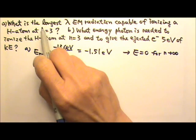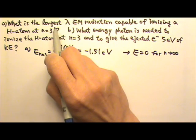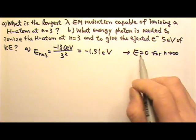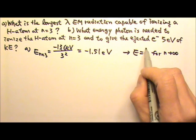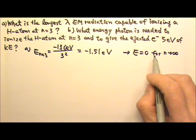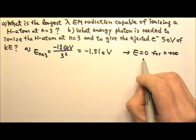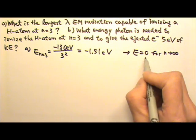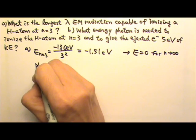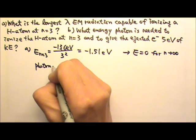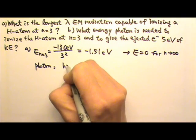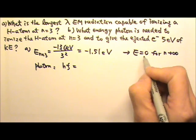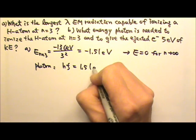And that's the longest wavelength because that provides the minimum energy, which means it goes to E equals zero exactly without any energy left over for the electron's kinetic energy. So from this to zero, the photon needed has to have hf equal to the difference, 1.51 eV.